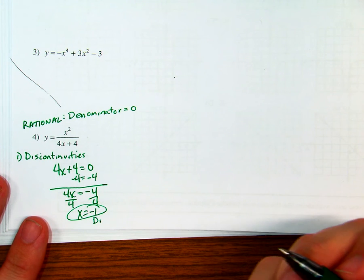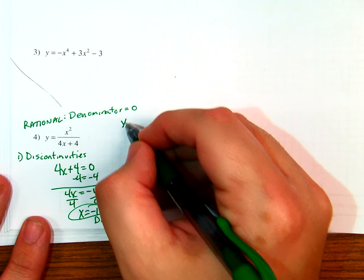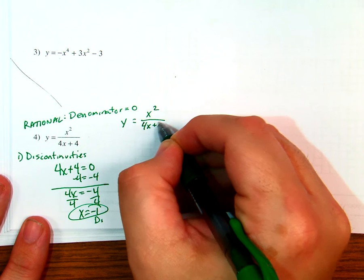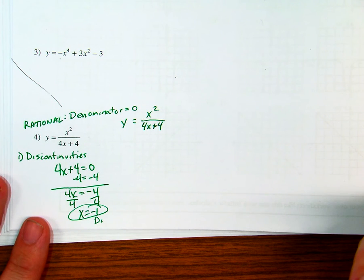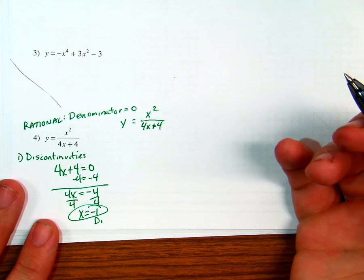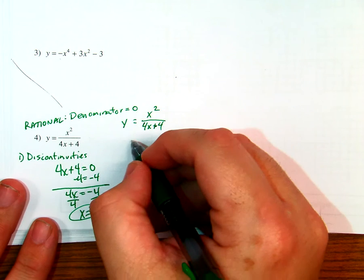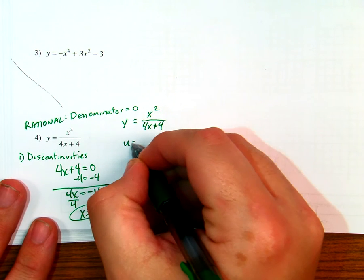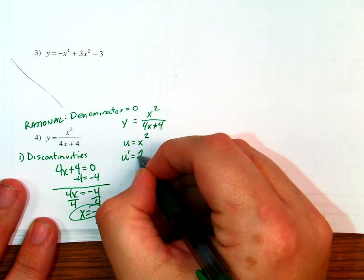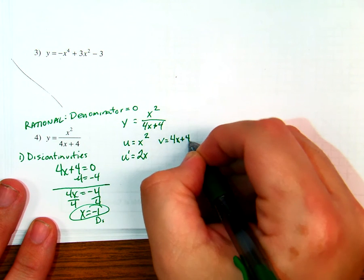Now I need to take y prime. The function is y equals x squared over 4x plus 4. I'm going to use the quotient rule. So u is the top function x squared, u prime is 2x; v is the bottom function 4x plus 4, and v prime is 4.